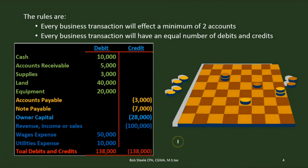We're going to compare the double entry accounting system to a puzzle — kind of a game. We've got to first learn the rules of the game, how the thing is set up. We want to know what the board is, what the pieces are, how to set the pieces on the board, and then how to move them. Once we know that, it becomes a lot more interesting to play the game, just as it would be for a game of checkers.